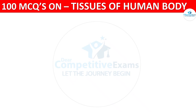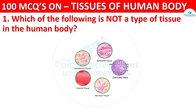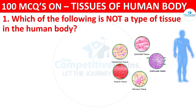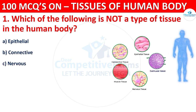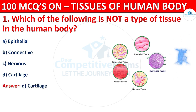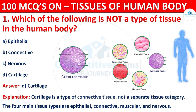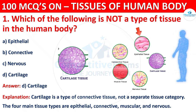Question number one: which of the following is not a type of tissue in the human body? Your options are epithelial, connective, nervous, or cartilage. The correct answer is D, that is cartilage. Cartilage is a type of connective tissue but not a separate tissue category. There are four main tissue types: epithelial, connective, muscular, and nervous.